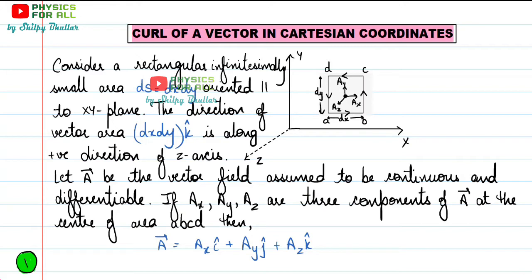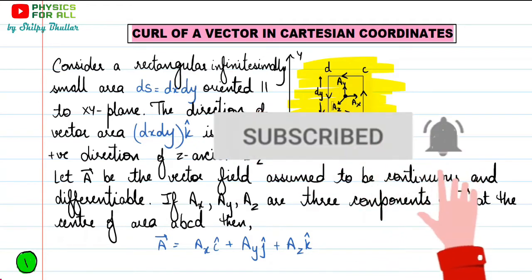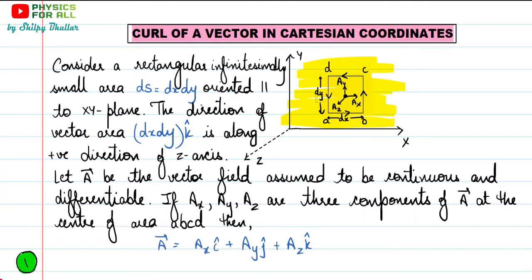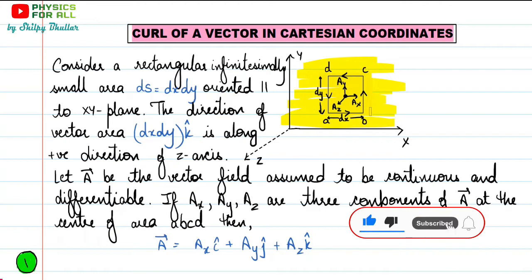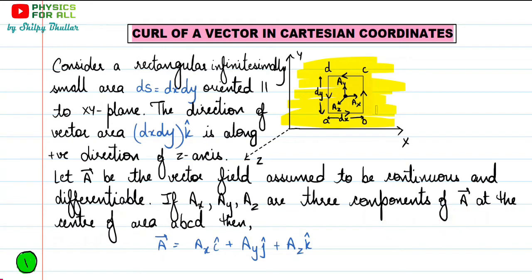Again, we will consider some vector field A which is spread over a region. We have a vector field A spread over this entire region. We are going to consider some surface — some area in this region — represented by the rectangular shape figure ABCD. We have considered some surface in that vector field, and this area is actually oriented parallel to the XY plane. Everything is being drawn in XY plane, and this rectangular area is a two-dimensional shape covering only the portion in the XY plane.